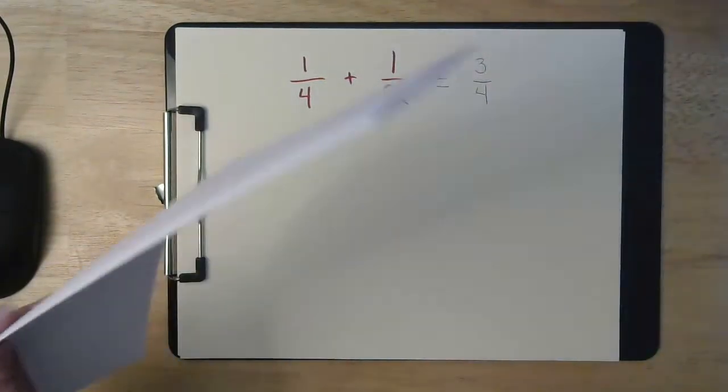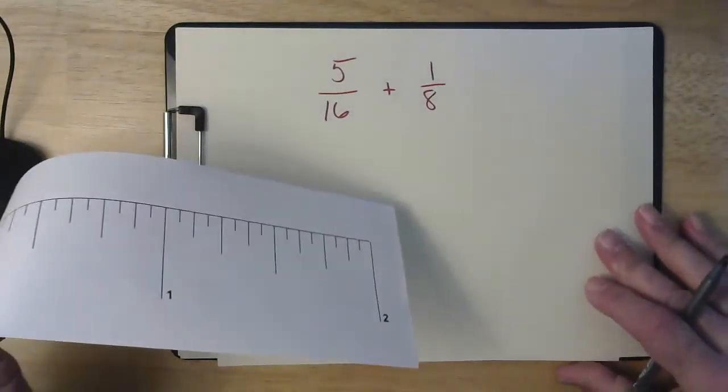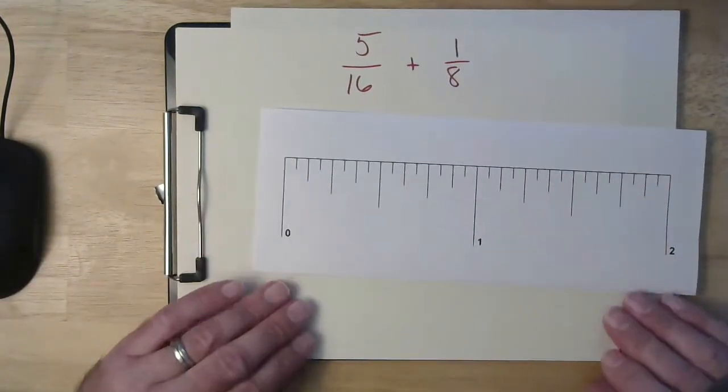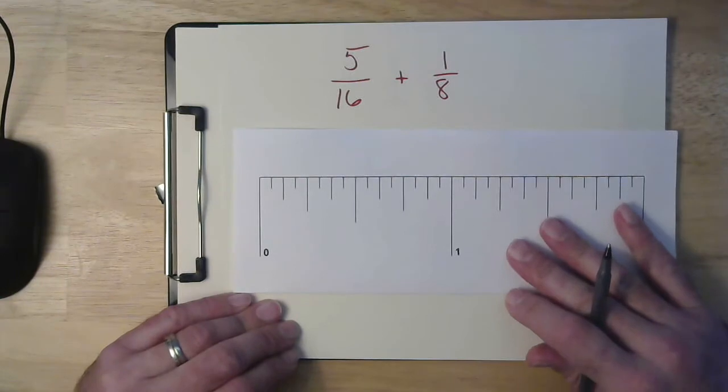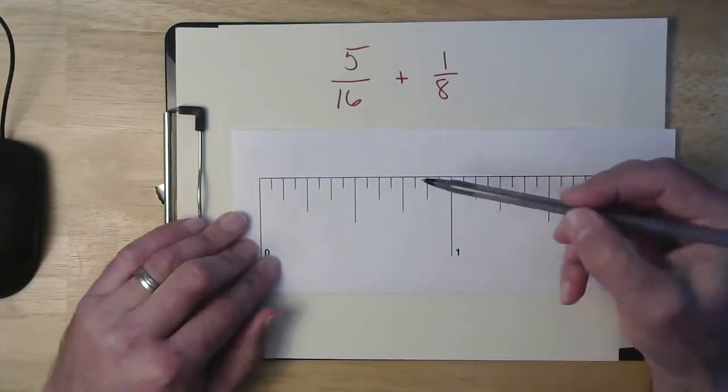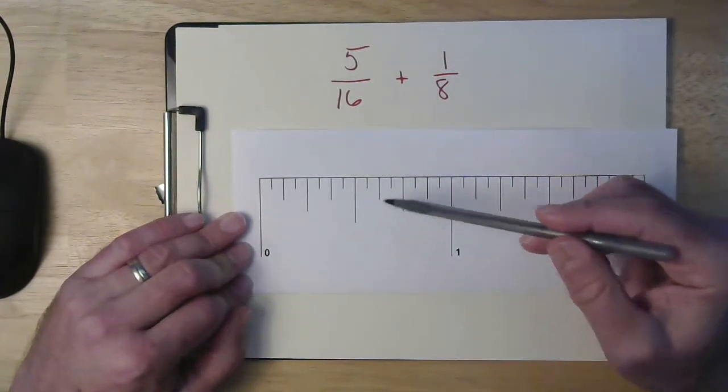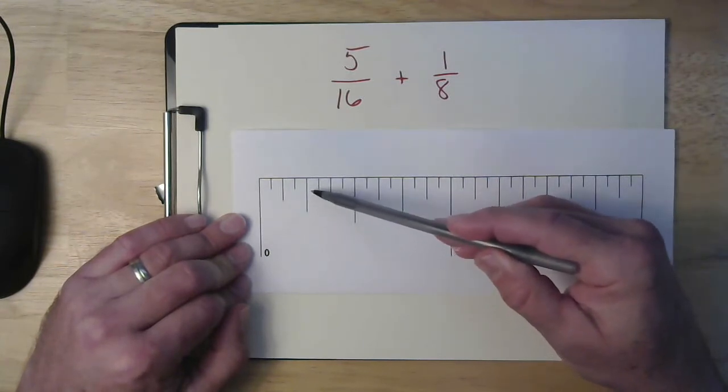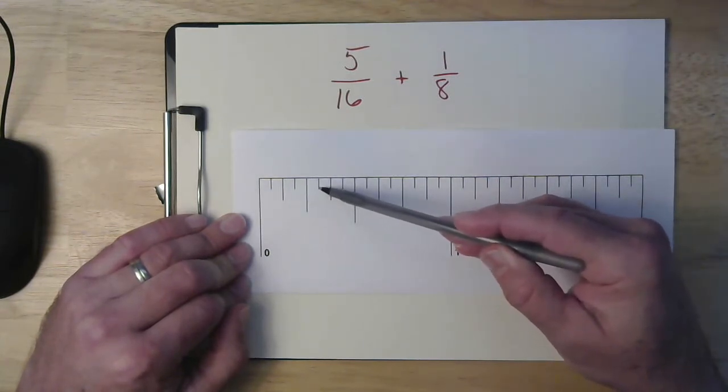Okay, so let's try another one here. So we got five-sixteenths plus an eighth. So first we have to find five-sixteenths. The way I do it is I know a quarter is four-sixteenths. So I go up here to five-sixteenths.